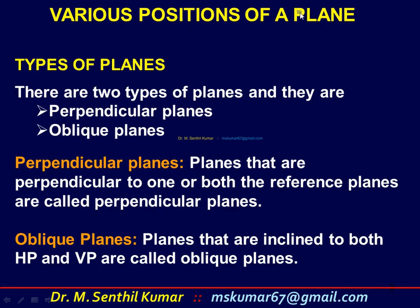Under the various positions of a plane, first we see the types of planes. There are two types of planes: perpendicular planes and oblique planes. Perpendicular planes are planes that are perpendicular to one or both the reference planes. Oblique planes are planes that are inclined to both HP and VP.